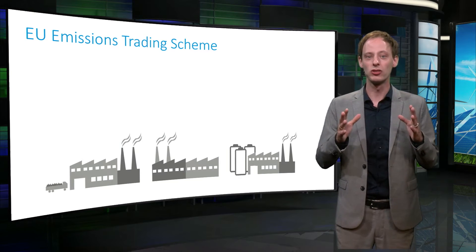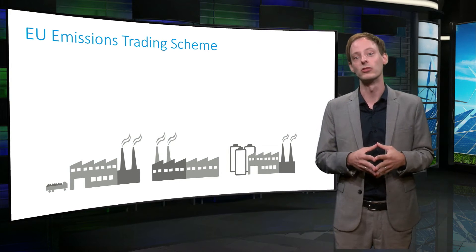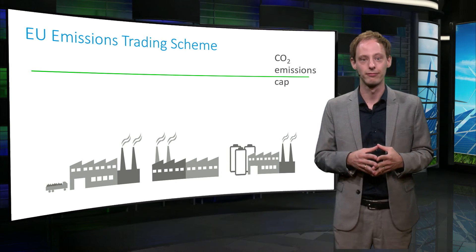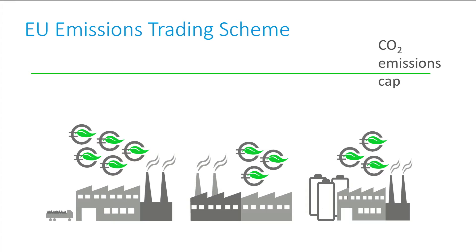The EU Emission Trading Scheme, or ETS, sets an upper limit to the total volume of CO2 emissions — the so-called emissions cap. This limit is achieved by allocating this fixed amount of emission permits to polluters every year. Every unit of CO2 emissions has to be covered by such a permit. Initial distribution or allocation can be done by an auction, or allocated freely. And, because reducing emissions is easier for some and more difficult for others, it has been made possible to trade the emission permits.